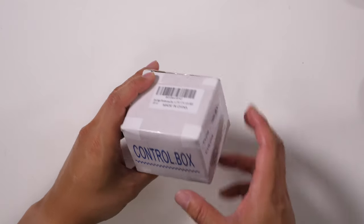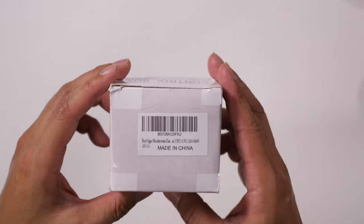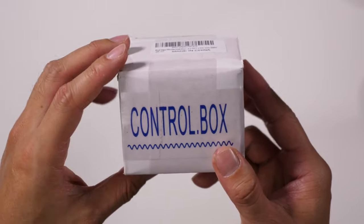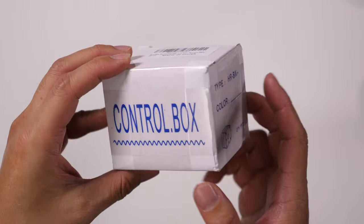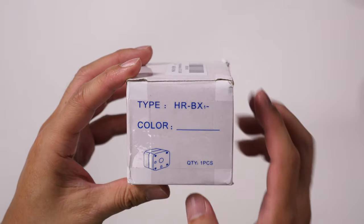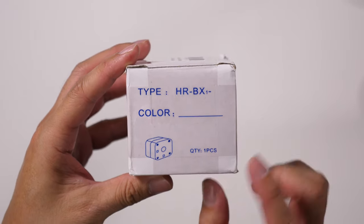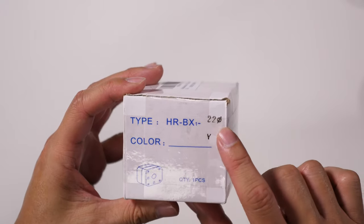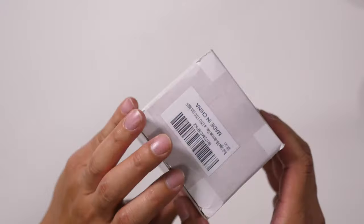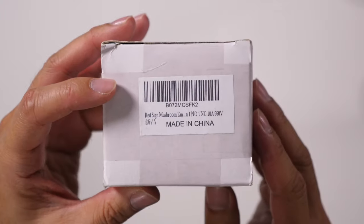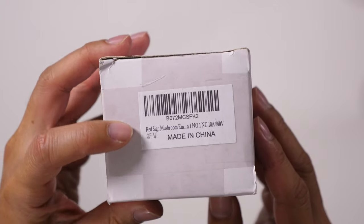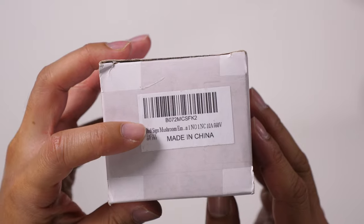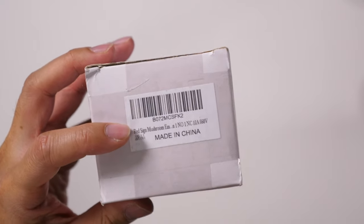This is an emergency stop button labeled as a control box with a model number. It has one unit inside. There may be some additional model information there, but it is made in China. The description on the label says red sign mushroom.